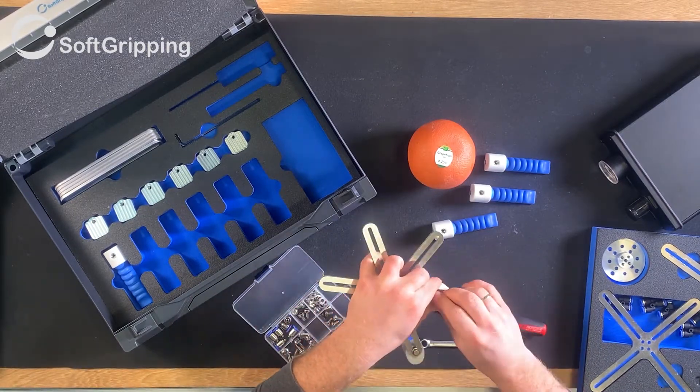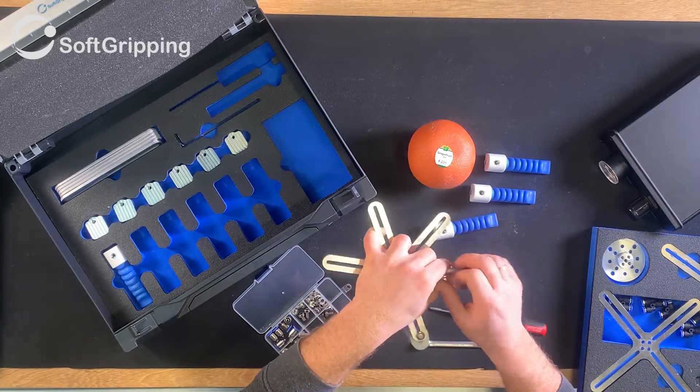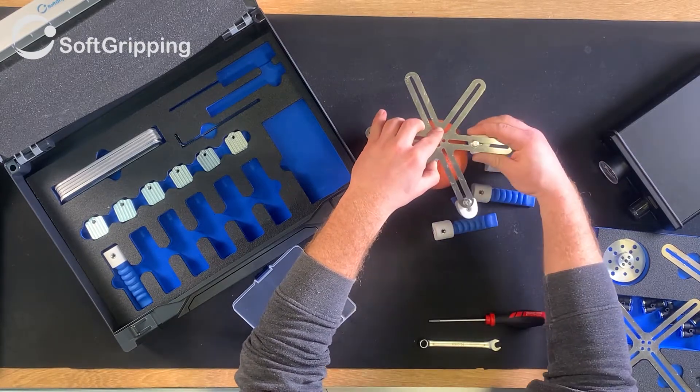We start by unpacking the kit and take out the plate that matches the shape and weight of our products and start mounting the fingers with the screws that are included in the kit.